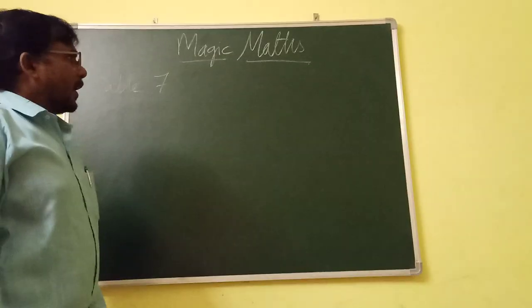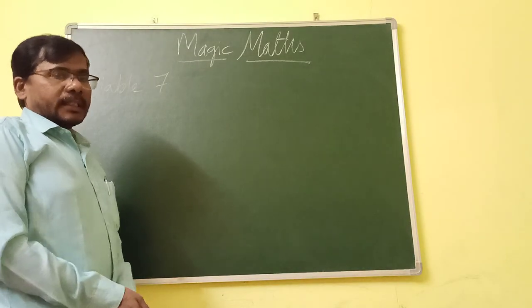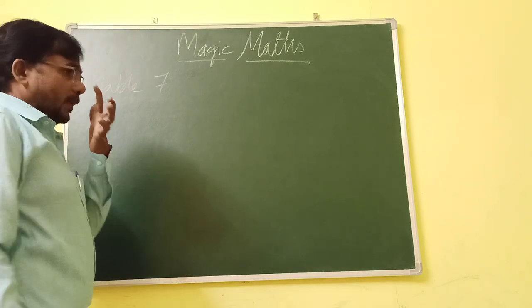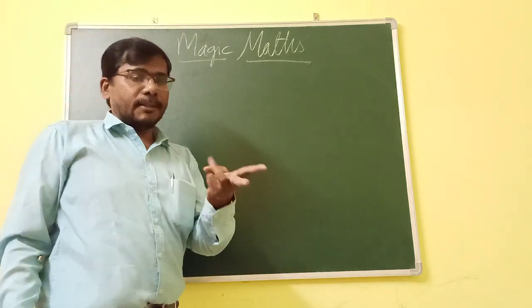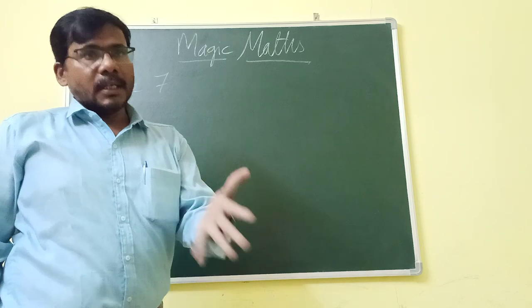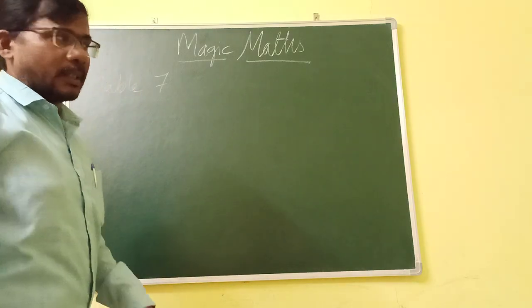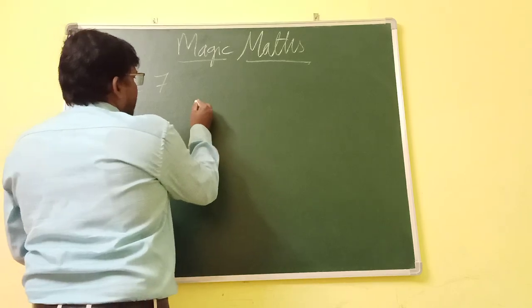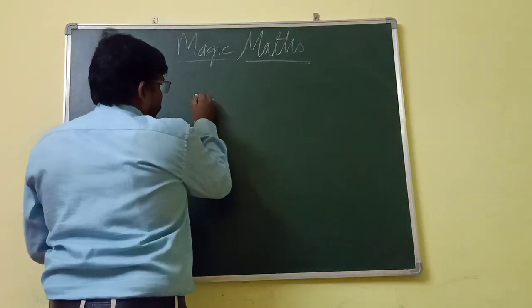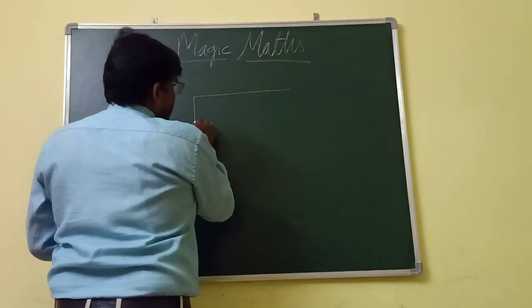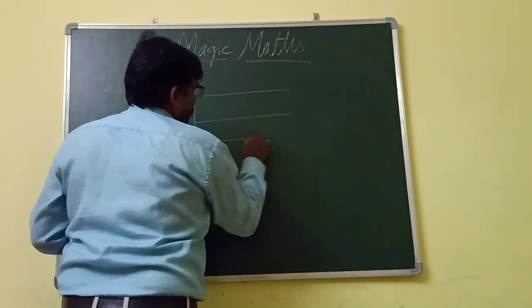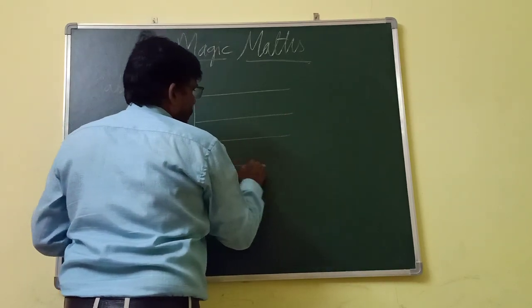Hello students. Good morning and today we are going to learn table 7. We already learned tables 2, 3, 4, 5 and 6. Now in table 7 it is similar to table 3, like we have drawn 3 rows and 3 columns.